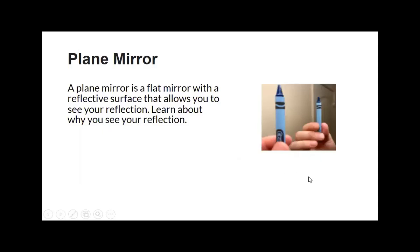Let's go ahead and get to the lesson. The first thing is the term plane mirror. When you hear the term plane mirror, it just has to do with the flat mirror. So when you're looking at the mirror, here I was just holding up a crayon in front of a mirror — I can see a reflection.